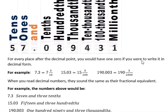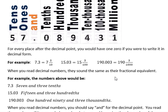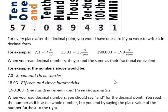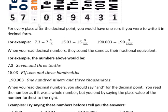When you read decimal numbers, you should say 'and' for the decimal point, then read the number as if it were a whole number. You end by saying the place value of the digit furthest to the right. So you say 'three tenths' because the rightmost digit is in the tenths place, or 'three hundredths' because the three is in the hundredths place, or 'three thousandths' because the three is in the thousandths place.